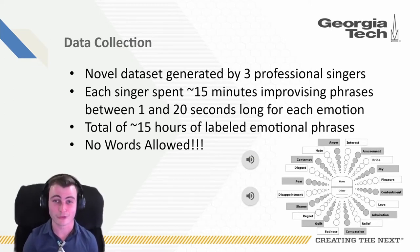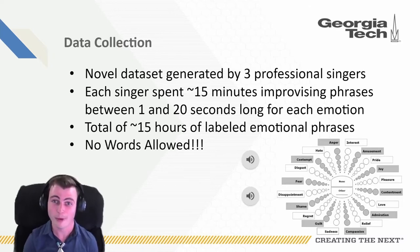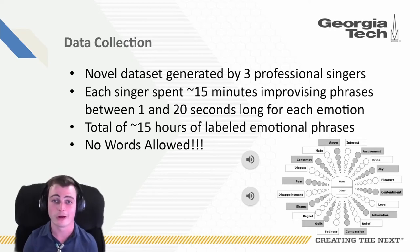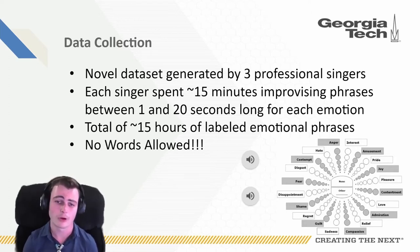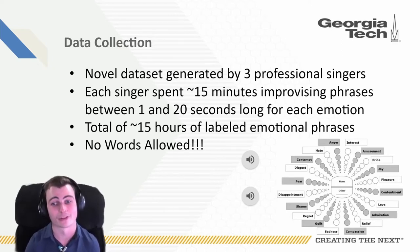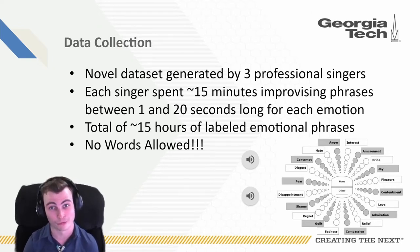Let's talk about our data collection. For this project, we hired three professional singers to improvise emotion. Each singer was tasked with improvising for about 15 minutes per emotion, and then to improvise as many phrases as possible within those 15 minutes. We later split up the phrases into segments between 1 second and 20 seconds long, depending on the intent of the artist. Artists were told no words allowed. In total, this gave us about 15 hours of labeled emotion phrases, labeled with the ground truth by the actor performing the emotion.